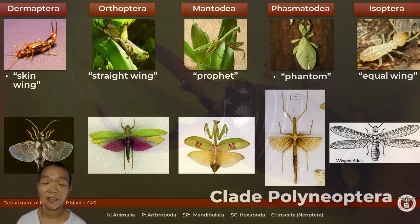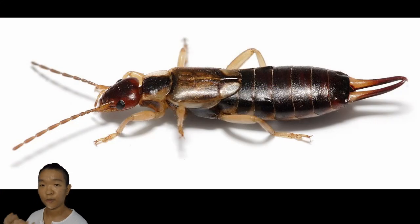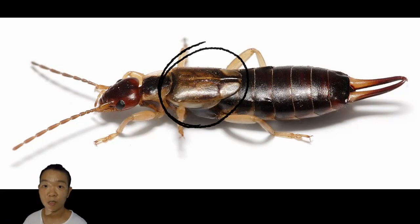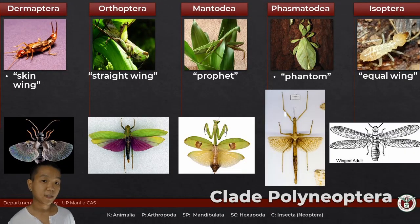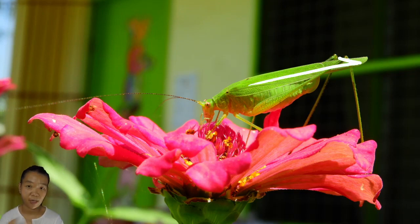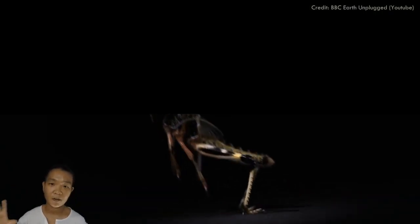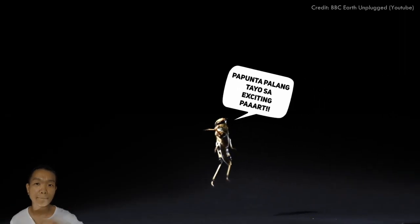Earwigs are best characterized by their pincer-like cerci. The name Dermaptera refers to their forewings, which blend in very well with the body. Orthoptera includes the grasshoppers, locusts, and katydids. 'Ortho' means straight — their tegmina form a parallel straight line behind their abdomen. Their hind limbs — the last pair of legs — are really long; they use them for jumping.